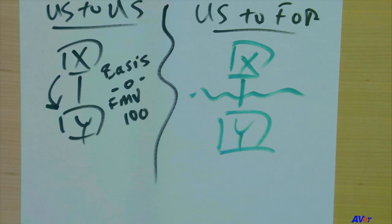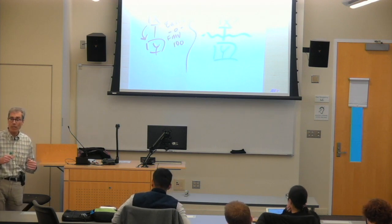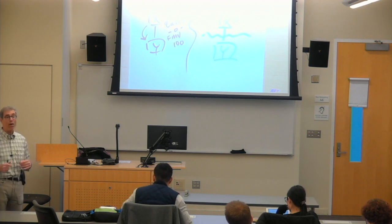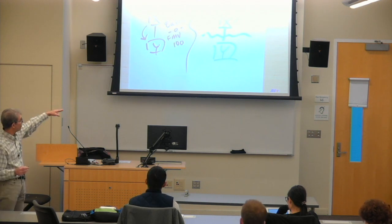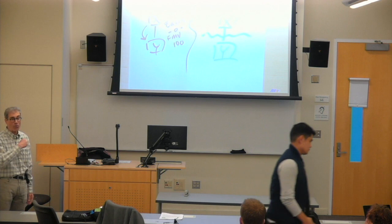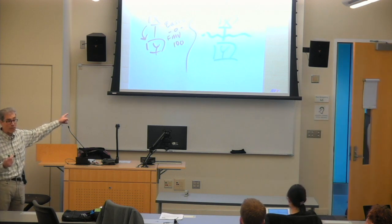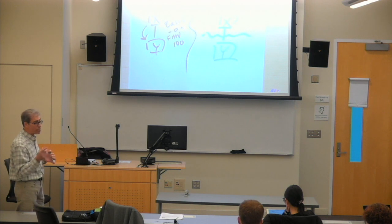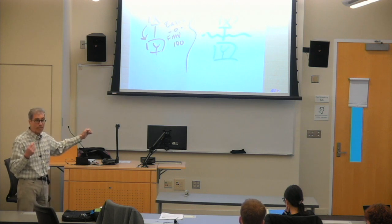So when X transfers to Y on the U.S. to foreign side, this is just like any other transaction. What's the fair market value of what X receives minus the basis of what it gave up? What did X receive? It received the fair market value or it received shares which have a fair market value. Now I said that with respect to the particular asset, there will not be a 351 transaction and you'll have taxability.